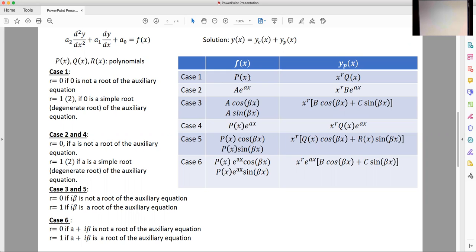So for example if f of x is some general polynomial p of x then the form of the solution you should guess is some x to the r times another polynomial, and r in this case is zero if zero is not a root of the auxiliary equation.